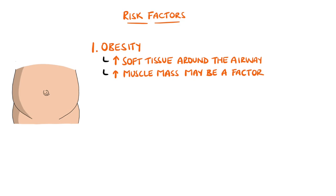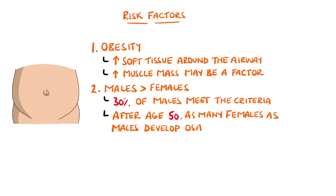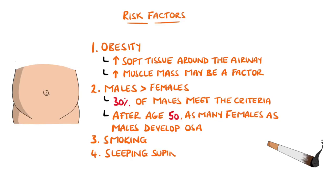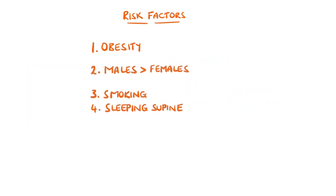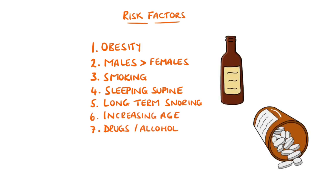This may also be why males are more commonly affected, but after 50 years of age, the number of females developing obstructive sleep apnea is the same as males. Smoking can cause inflammation and fluid retention, thereby narrowing the airway, and sleeping supine, meaning on the back, is also thought to contribute. Other factors include long-term snoring, as this is thought to injure the nerves in the upper airway, increasing age, drugs, and alcohol, as they can be sedating and contribute to the reduced muscle tone.